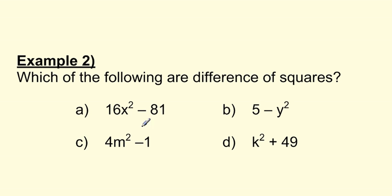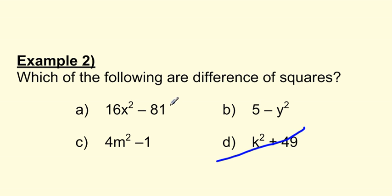Which of the following are differences of squares? Remember what we're looking for: first, we need a subtraction sign in between. So the one with a plus sign is definitely out. Out of the remaining three, we need to be able to take the square root of both terms. The square root of 16x squared is 4x and the square root of 81 is 9, so that one definitely is a difference of squares. Can I take the square root of 5? Not easily, so we cancel that one out. Can I take the square root of 4m squared? That would be 2m. And the square root of 1 is just 1. So those two are the differences of squares.